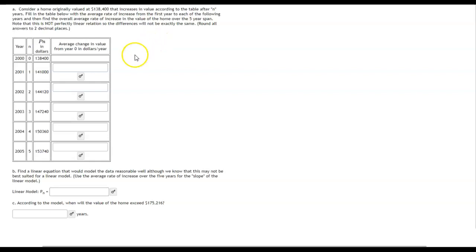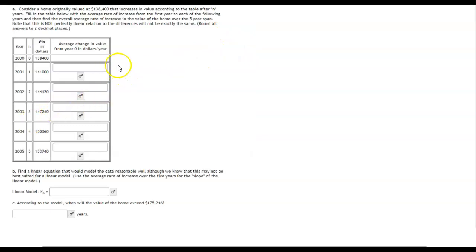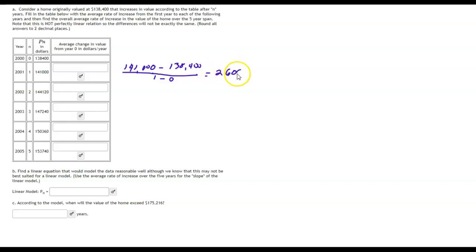The average change in value from year to year in dollars per year would be dollars over years. So that's the slope, basically from $138,400 to $141,000 in one year. So that would give us $141,000 minus $138,400 over 1 minus 0. Of course that's just 1. And that's going to give us $2,600 is the increase. $2,600.